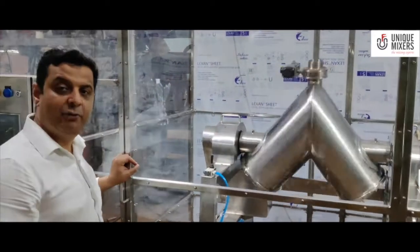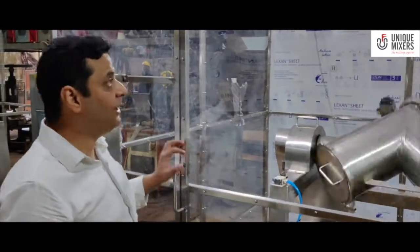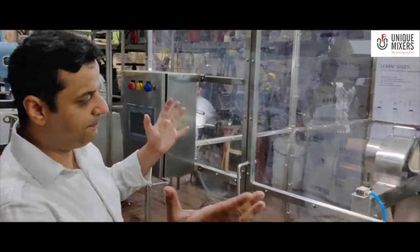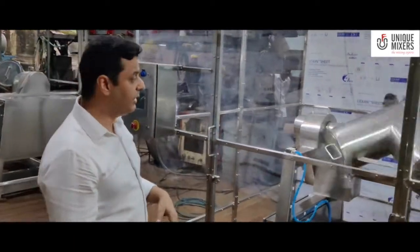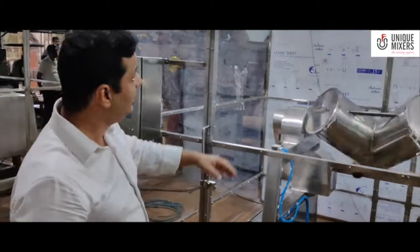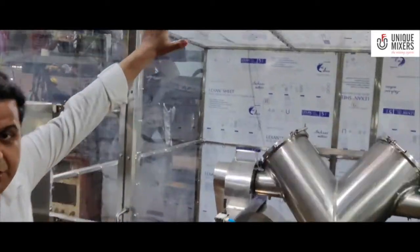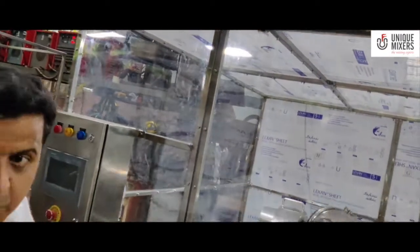This is the unique 75 liter V-blender and what we have here is a safety enclosure. The purpose of this safety enclosure is because it's a rotating component, it could pose a safety hazard. We have a switch here, a safety switch which ensures that the moment this enclosure is opened and somebody has to enter inside for operation, the machine will stop.